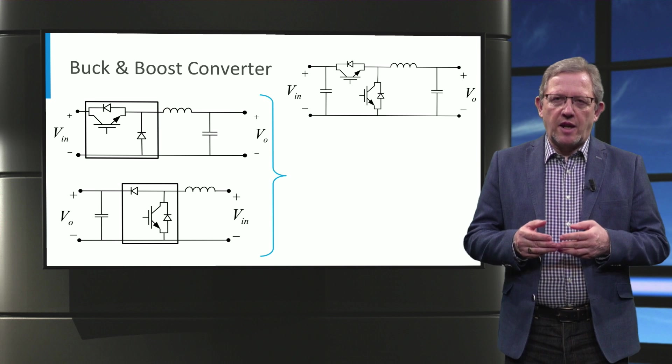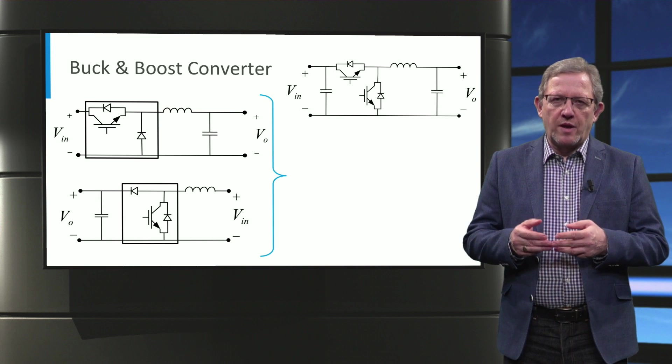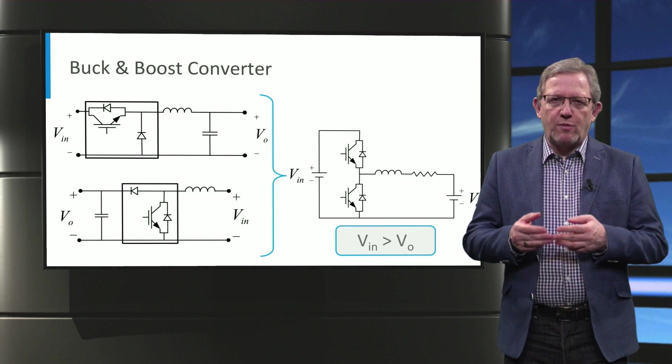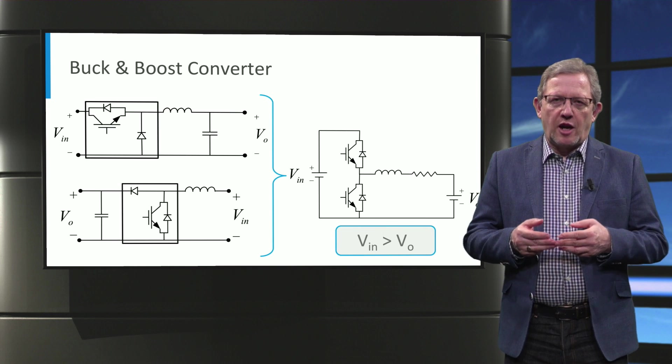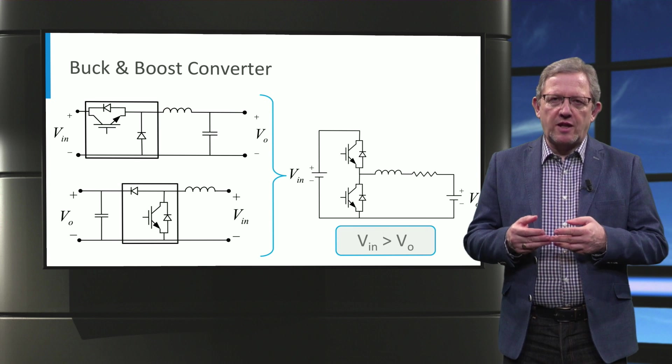In practice, the inductor is never ideal, so there is always some ohmic loss too. So a resistor is in series with the inductor. Then the topology of the buck and boost converter is redrawn into this topology. The output voltage is in this case battery voltage and we assume constant input voltage too.